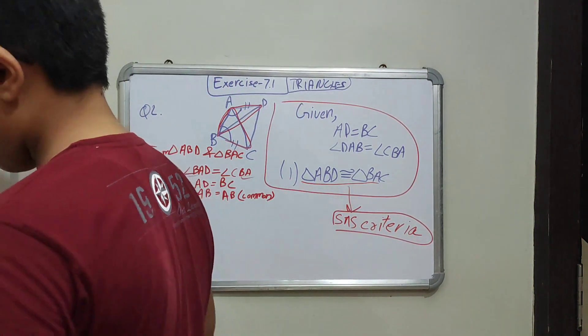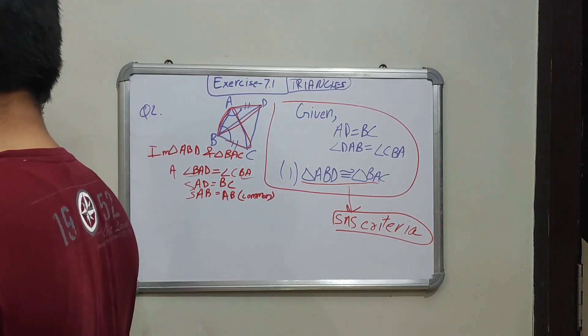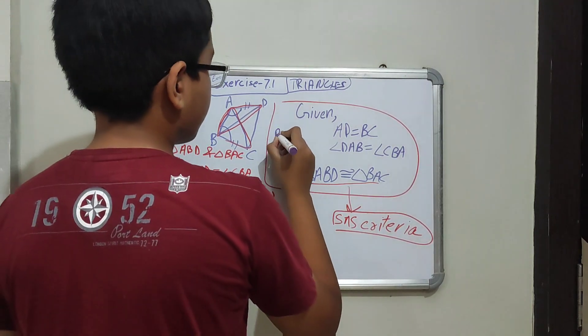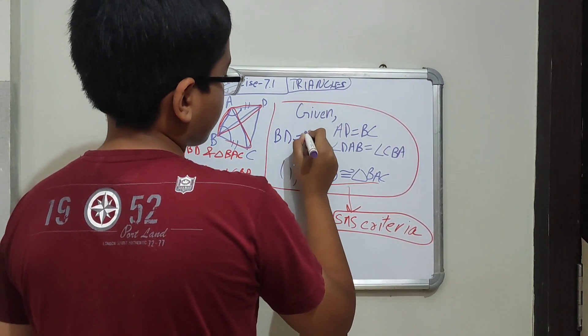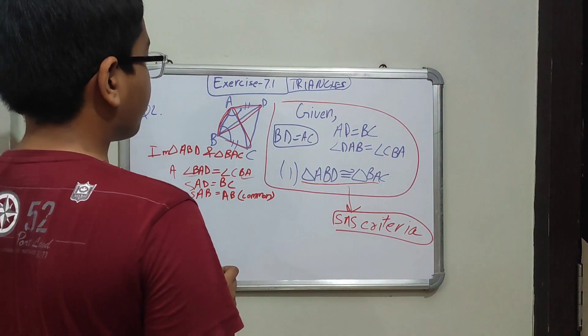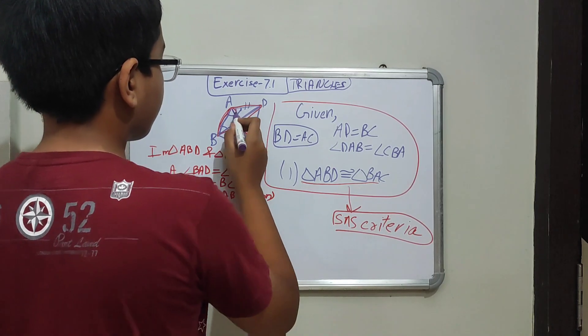This is the first part of this question. What is the second part? We need to prove that BD equals AC. BD, I don't know. This is BD and this is AC.